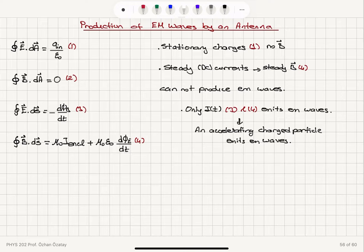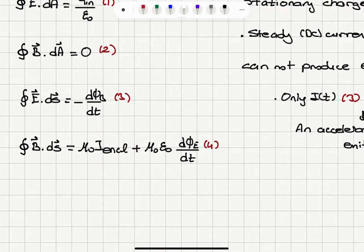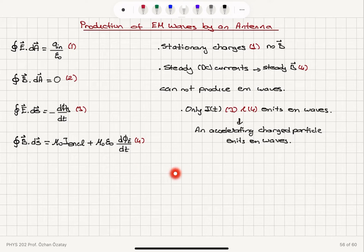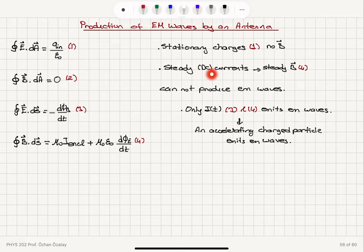On the other hand, looking at equation number four, steady DC currents enclosed by a surface will produce a magnetic field — this is the path integral of the magnetic field. However, if you have a steady DC current, that means there is no net charge enclosed by the surface at any time, so the electric field will be zero. Therefore, steady DC currents and stationary charges cannot produce electromagnetic waves.